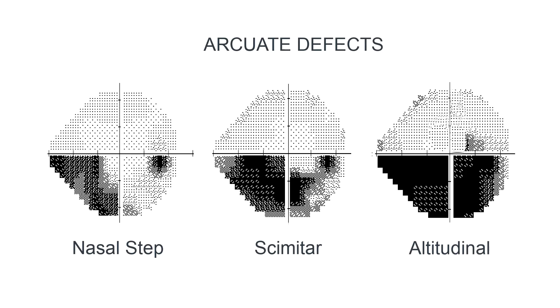There are many causes of these arcuate defects, including optic nerve inflammation, ischemia, compression, increased intracranial pressure, trauma, and glaucoma.